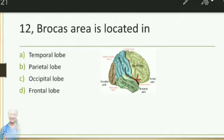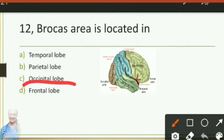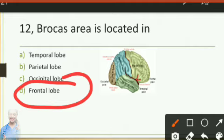Broca's area of the brain is located in: option A temporal lobe, option B parietal lobe, option C occipital lobe, option D frontal lobe. The answer is the frontal lobe.